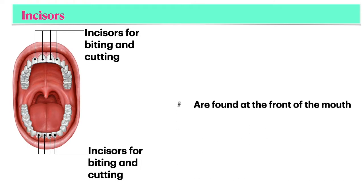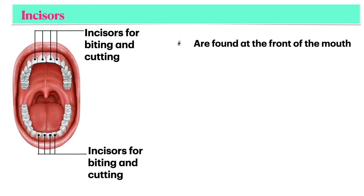Incisors are used for biting and cutting. Incisors are found at the front of the mouth. They are sharp and chisel-shaped.